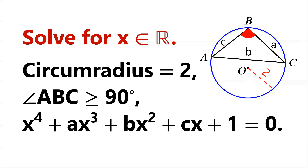Find all real numbers x for which there exists a triangle ABC with circumradius 2, such that angle ABC is greater than or equal to 90 degrees, and x to the power of 4 plus ax cubed plus bx squared plus cx plus 1 equals 0. Where a equals BC, b equals CA, c equals AB.